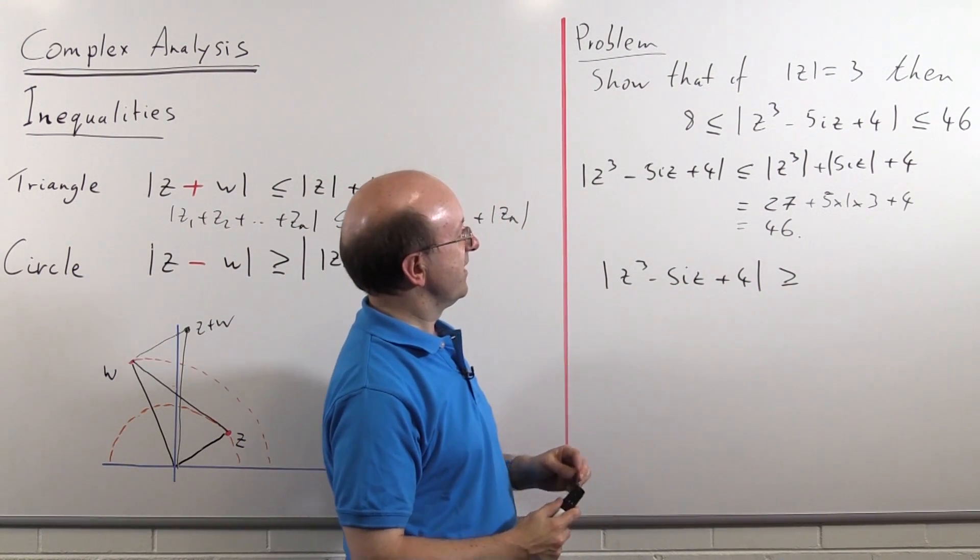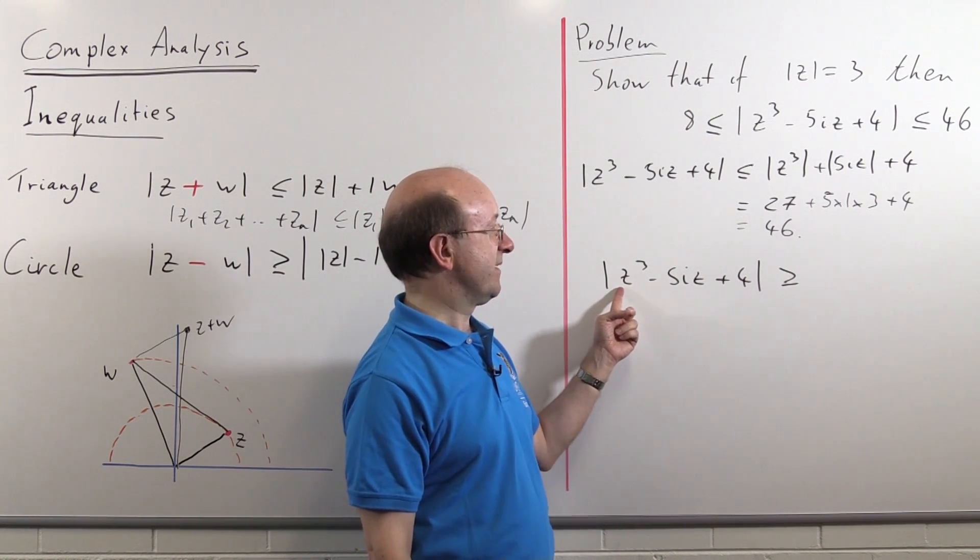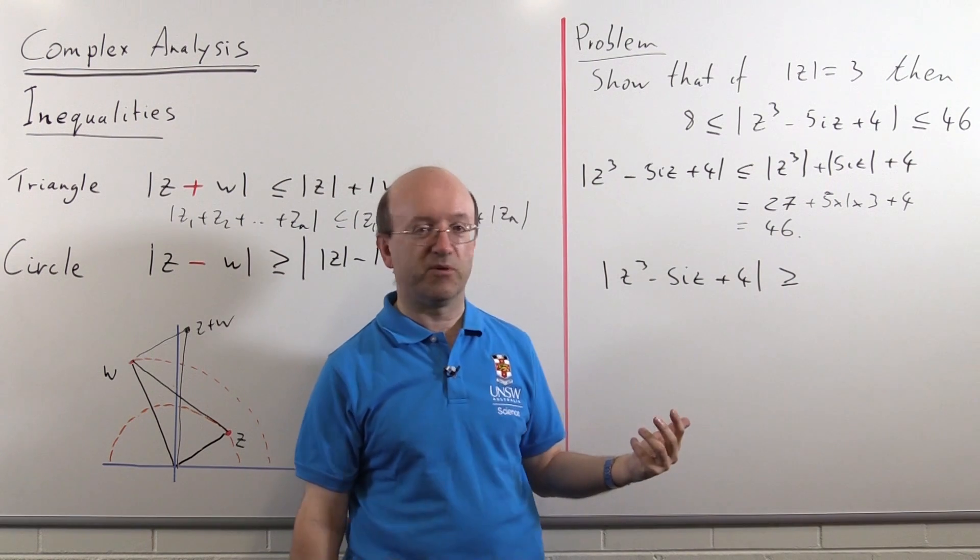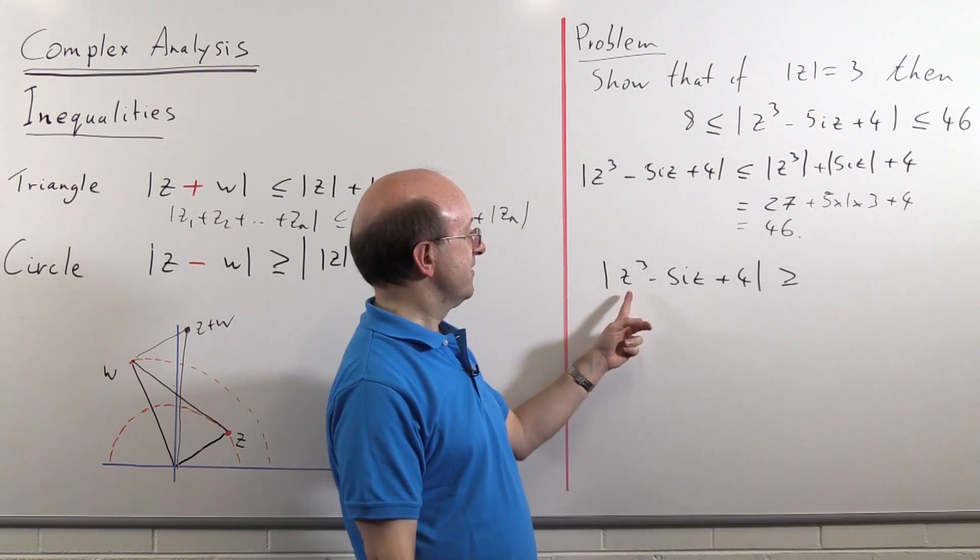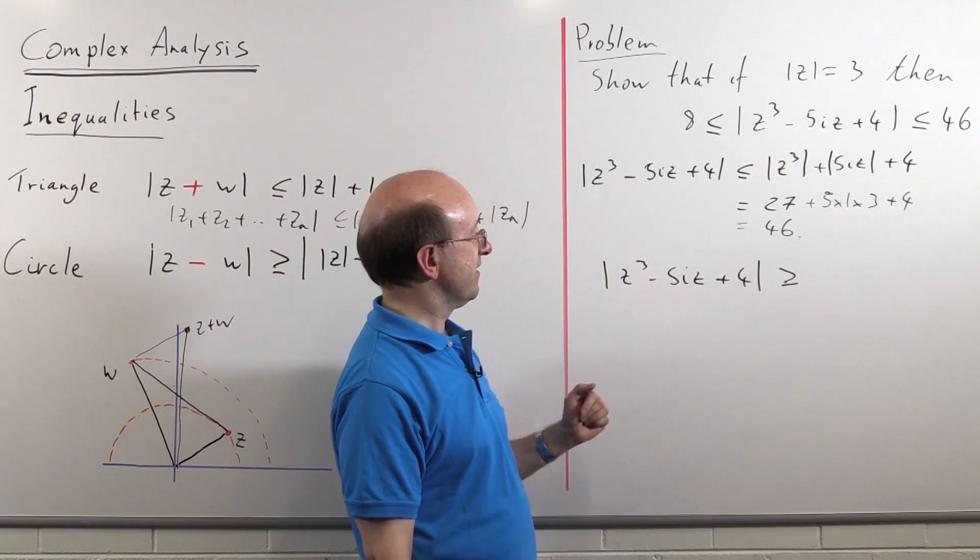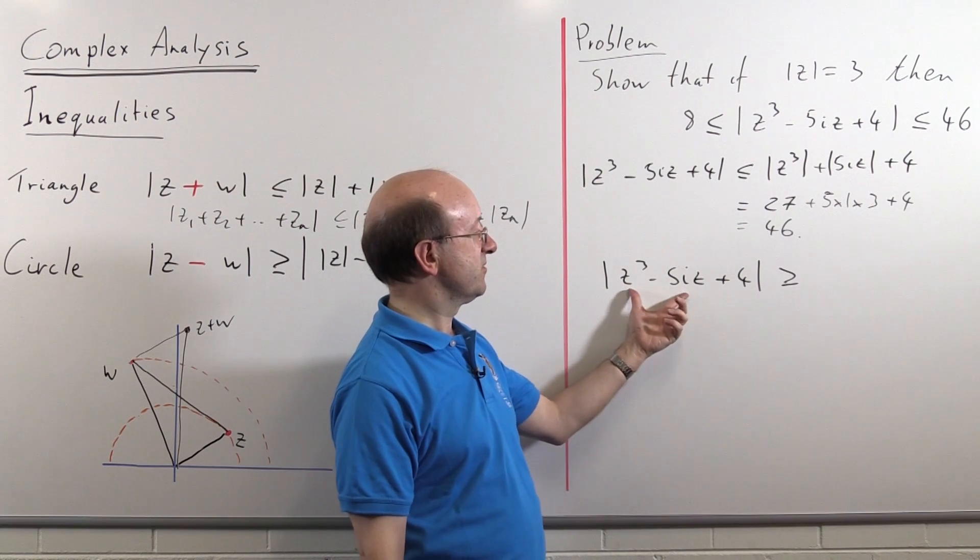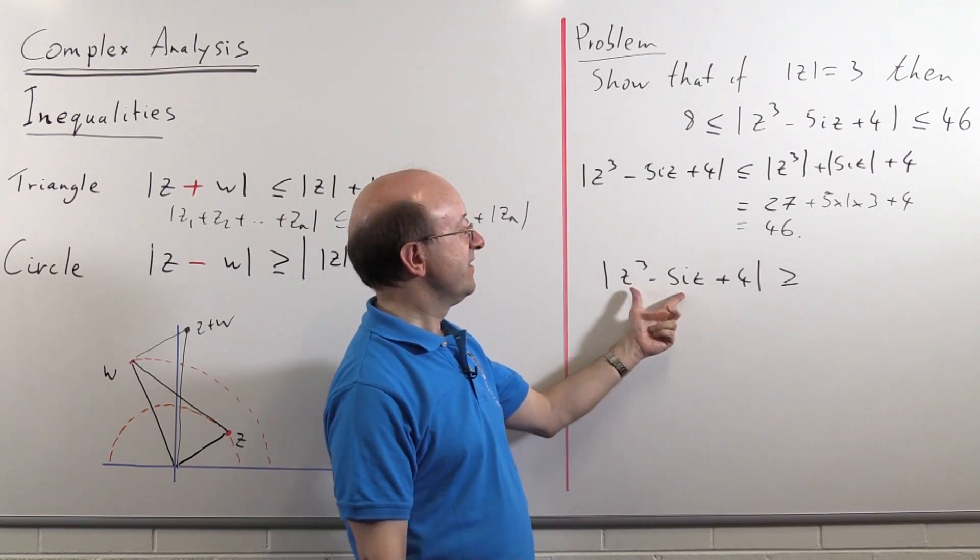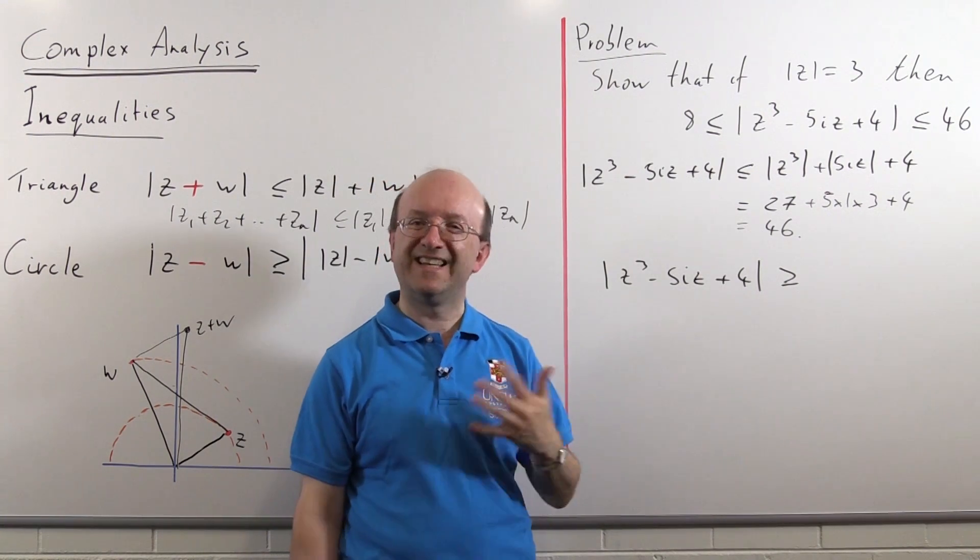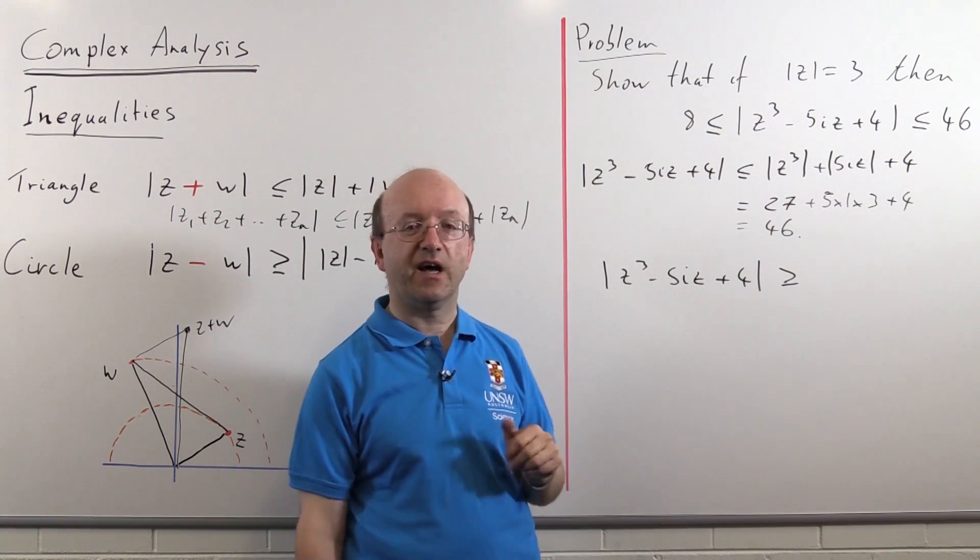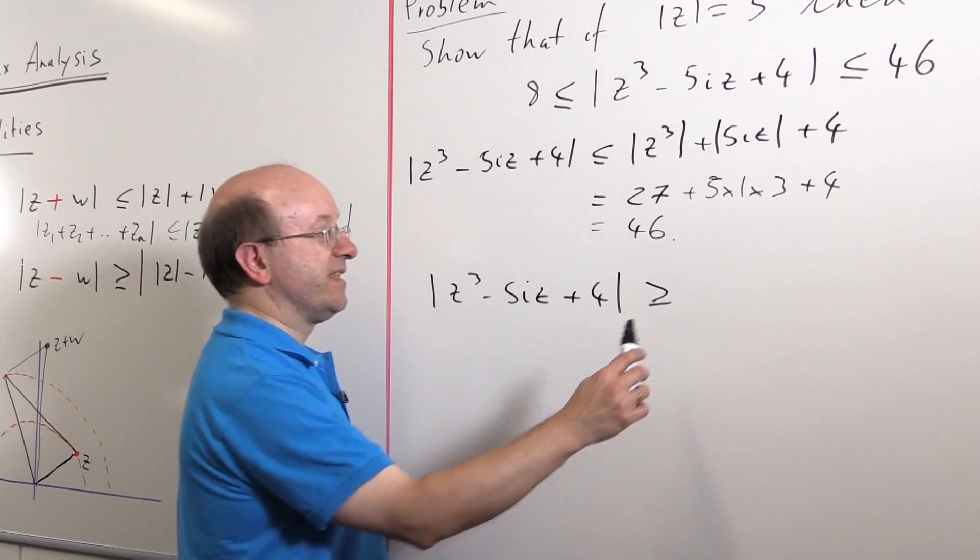Well, we've already done a lot of the work anyway. The modulus of this term, z cubed, is 27. We've already worked that out. 5i z is going to have modulus 12, and this thing is going to have modulus 4. So these two terms put together, well, that's going to be 27, and that's going to be about 12. So this term is going to be, sorry, that's going to be 15. This term is going to be about 12, and that's going to be 4. So these are the big terms. And it's usually the term with the highest power involved that's going to be the thing that you hive off.